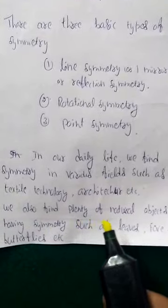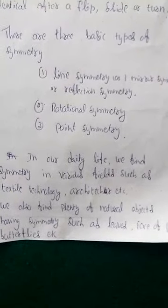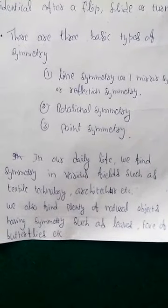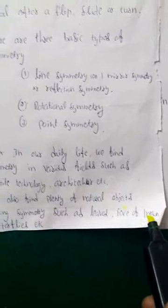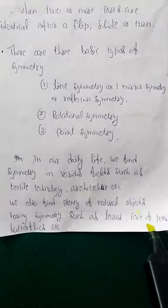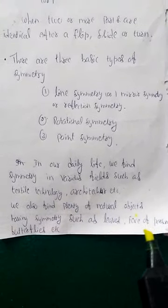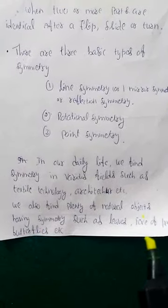We also find plenty of natural objects having symmetry, such as leaves. Take one leaf and fold it exactly in the middle — the left side of that folded line and the right side will be the same. That means the leaf also has symmetry. Next, the face of a person — a doll face clearly shows that the face also has symmetry, as the left side parts and right side parts of the human face are the same. And butterflies: the butterfly wings — left side and right side have the same shape and same design. So the butterfly is the best example of symmetry.